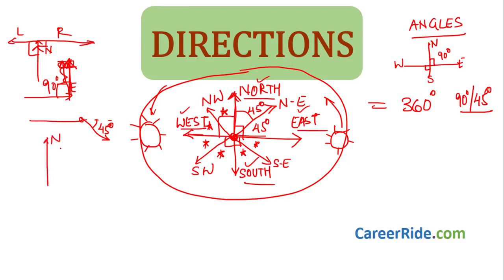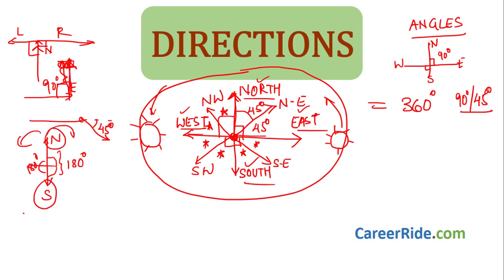Another example: say I am walking towards North and I make a turn of 180 degrees from the right. I travel 90 degrees first, then another 90 degrees — that is 180 degrees — and now I am facing South. If I take a 180-degree turn from the right or from the left, the result is the same: I face in the opposite direction. So whenever a person makes a 180-degree turn, the person will face in the exact opposite direction. If going East and taking a 180-degree turn, you will face West.